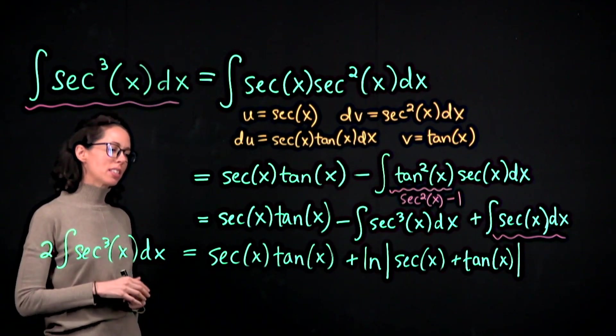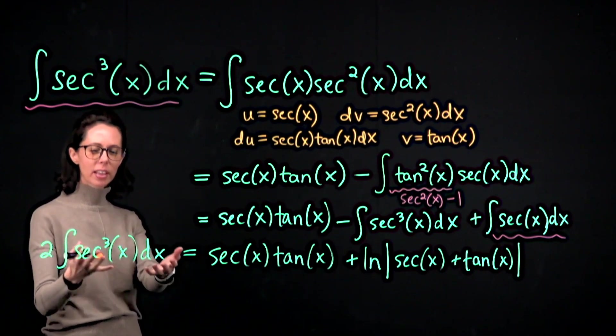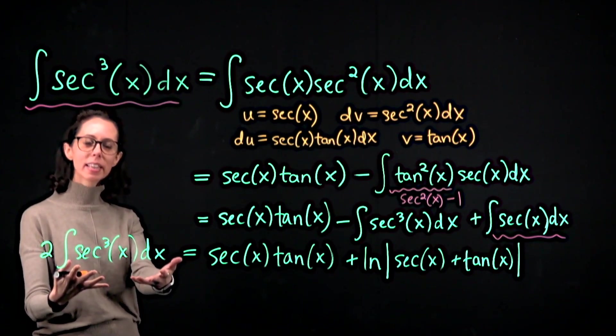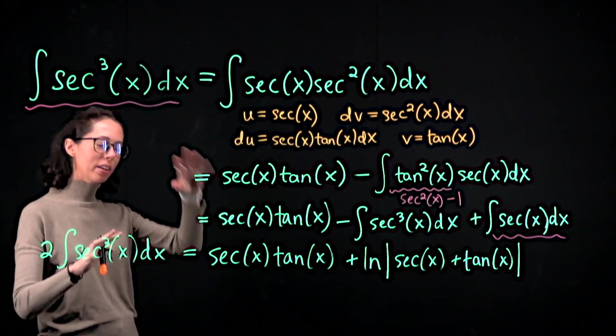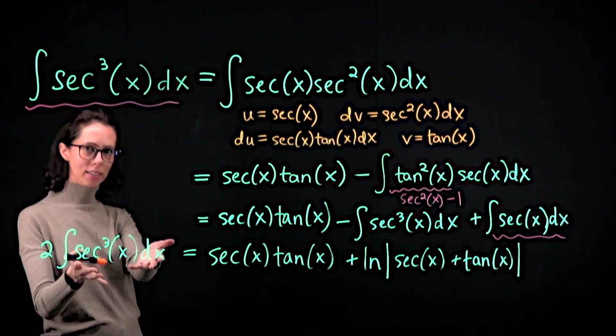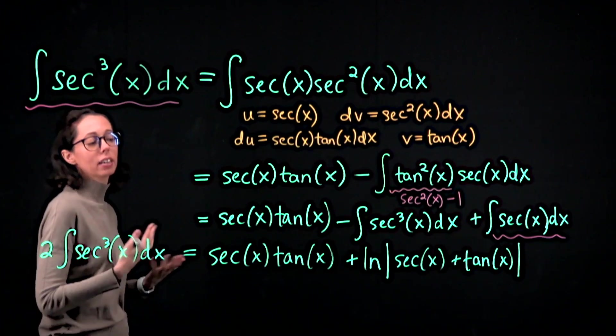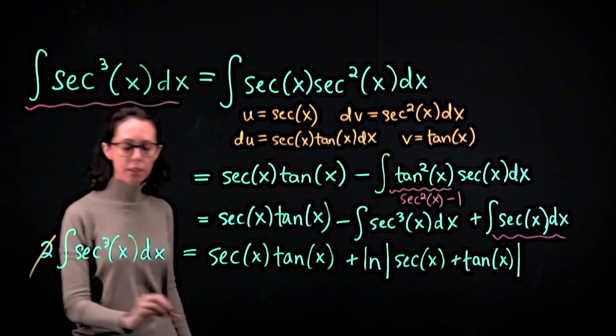Sometimes these computations almost feel unsatisfying because it felt like I never actually anti-differentiated this. It's almost like a shortcut or a roundabout method to getting to what the antiderivative is. I'm isolating it in an equation but that's just how we do it. So I'm going to divide by two.